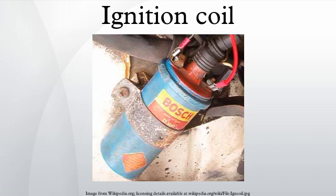Under laboratory conditions as little as 1 millijoule is required in each spark, but practical coils must deliver much more energy than this to allow for higher pressure, rich or lean mixtures, losses in ignition wiring, and plug fouling and leakage. When gas velocity is high in the spark gap, the arc between the terminals is blown away from the terminals, making the arc longer and requiring more energy in each spark. Between 30 and 70 millijoules are delivered in each spark.